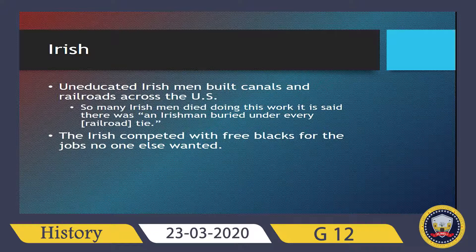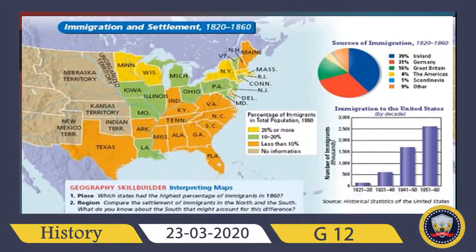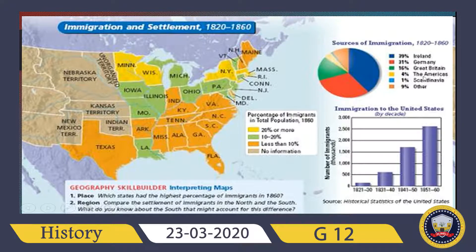You can see the immigration and settlement map between 1820 and 1860. The colors represent different groups: red for Germans, green for Great Britain, yellow for Scandinavians, and blue for others respectively.